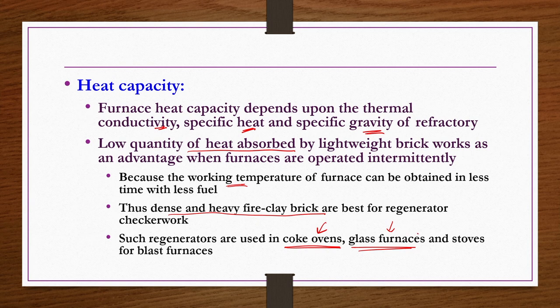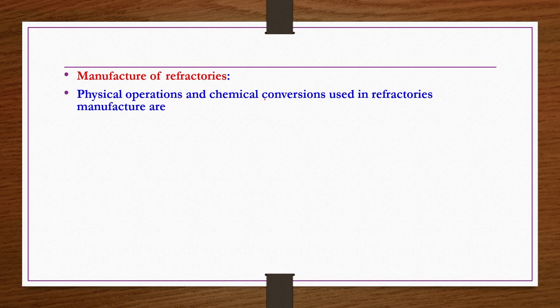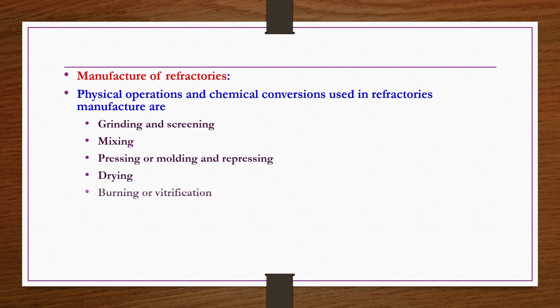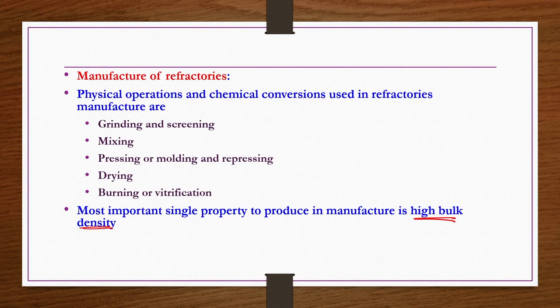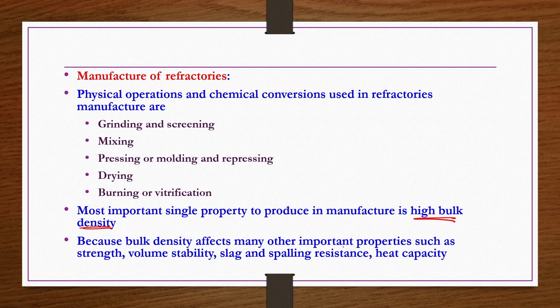Now we talk about the manufacture of refractories. Physical operations and chemical conversions used in refractories manufacture include grinding and size reduction, screening, mixing, pressing or molding and repressing, drying, and finally burning or vitrification or firing. The most important property is high bulk density, because bulk density affects many other important properties such as strength, volume stability, slag and spalling resistance, and heat capacity.